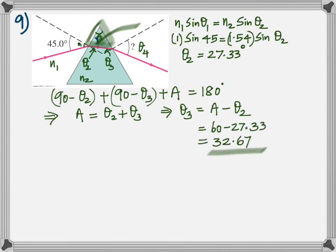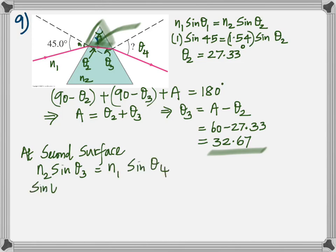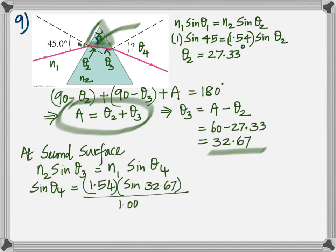Once you get theta 3, apply Snell's law at the second surface and find theta 4. So the answer is 56.2 degrees.